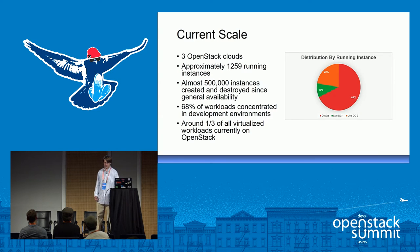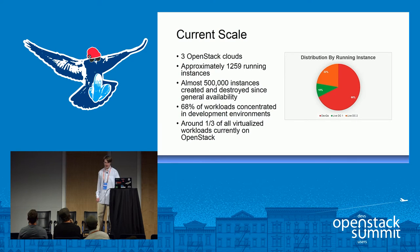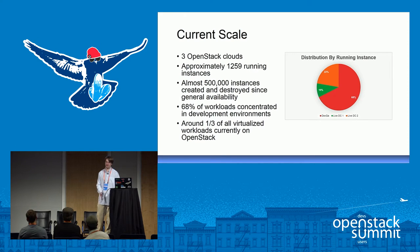What's our current scale? Right now we have three separate OpenStack clouds — one backing our development resources and two backing our live environments. We have approximately 1,259 running instances at that snapshot in time. One interesting metric is that since we started OpenStack, we've had almost 500,000 instances created and destroyed since we made it generally available. About 68% of the workloads are concentrated on development environments, and around one-third of our virtualized workloads are currently on OpenStack.